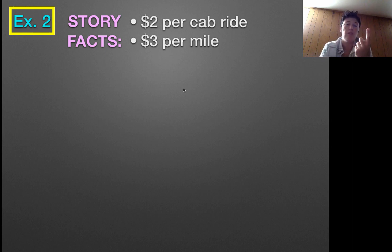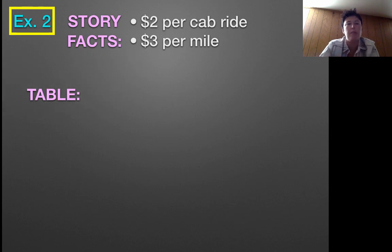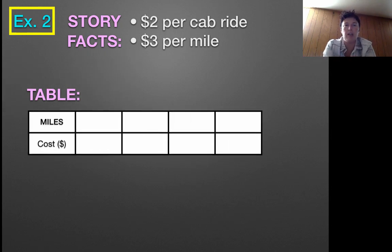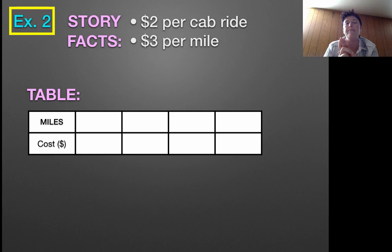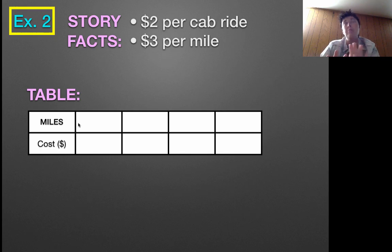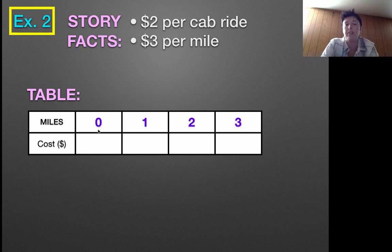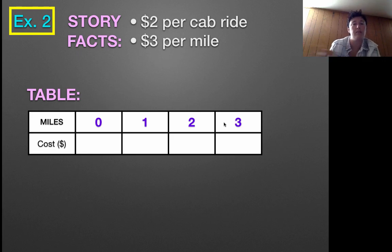Now that we have our story, we're going to make a table, get our equation, and get our graph so that we have all four pieces. Let's start with the table. We are measuring two things: how many miles we're driving and what's the cost of being in the cab. My table will have miles and cost — my x and y, my input and output. Starting with the basics: if I get into the cab and don't drive anywhere, I've gone zero miles. Then once we start driving — one mile, two miles, three miles, four miles, five miles, and it keeps going.